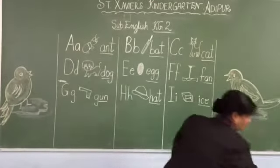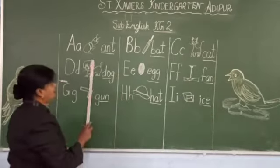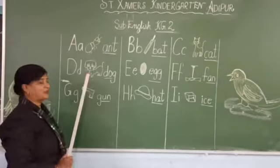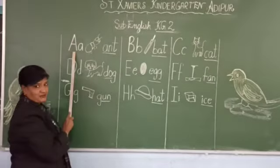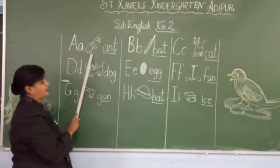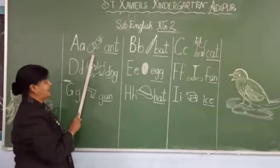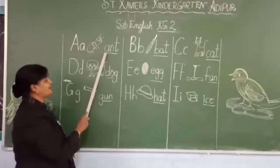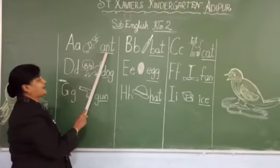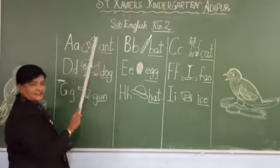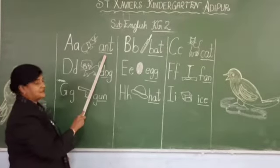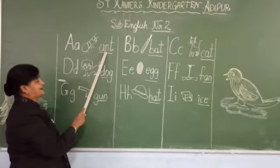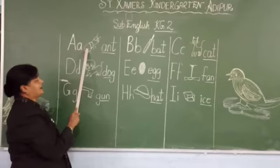We shall read these words. This is your capital A, small. A is for ant. How do you spell ant? A, N, T. What is this? Ant. Come on, say along with me. A, N, T.